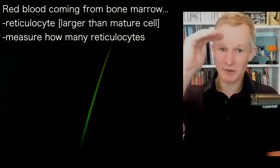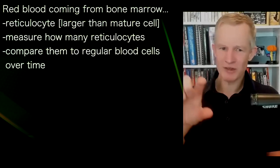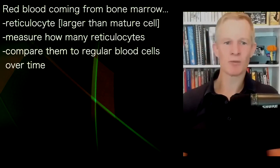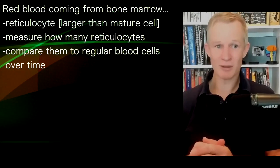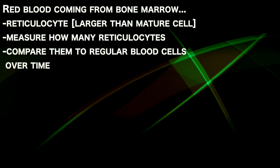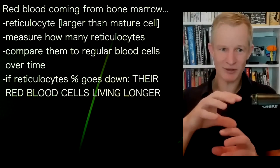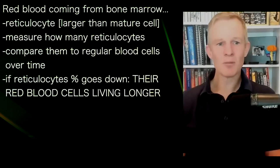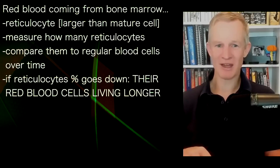If someone's red blood cell count is staying stable across a series of blood tests, we can monitor the number of new red blood cells they're making to maintain that count, giving us an inverse measurement of red blood cell lifespan. For example, if their red cell count remained stable but their reticulocyte count dropped from 50 down to 40 or 20, we know their red blood cells must be living longer.